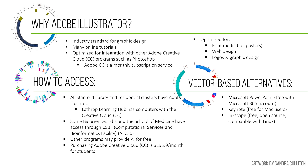If you want to purchase Adobe Creative Cloud, it is $19.99 a month for the first year if you are a student. If you don't want to pay for Adobe Illustrator, there are some other vector-based alternatives. The most familiar to most scientists is Microsoft PowerPoint, which is free with Microsoft 365 accounts. You can do most things in PowerPoint, except for making more complicated shapes. There's also Keynote, which is free for Mac users, and Inkscape, which is free open source software compatible with Linux.